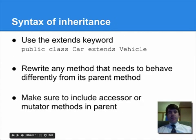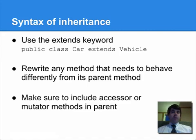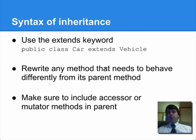As far as the syntax goes, we're familiar with the implements keyword for interfaces. In inheritance, you use the extends keyword. You can actually do both — there's no reason why you couldn't say public class Car extends Vehicle implements Drivable, Washable. You can have interfaces and inheritance in the same class. Once you've done that, you can add new methods, add new variables, and rewrite old methods, which we'll see in another lesson. You should include code that needs to change the behavior of its parent.